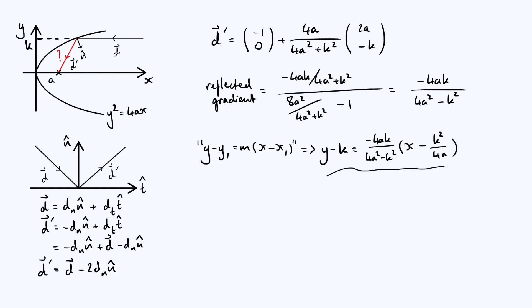To figure out where it cuts the x-axis, all we have to do is set y to 0. If that happens, then this y disappears. You can cancel this -k with the -k on the other side, multiply both sides by (4a² - k²)/(4a), and get (4a² - k²)/(4a) = x - k²/(4a). Notice that there is a -k²/(4a) there, and also there, so that cancels from both sides.